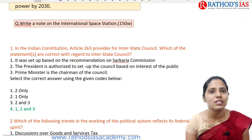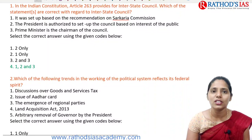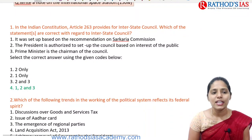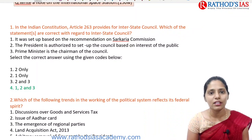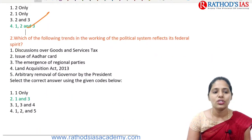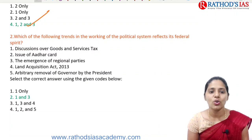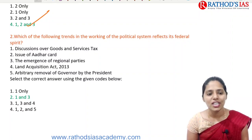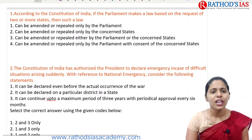For practice, write a note on the International Space Station in not more than 150 words. Yesterday's prelims questions: Article 263 on Interstate Council — the council was set up on the recommendations of the Sarkaria Commission, the President has the right to set it up in public interest, and the Prime Minister is the chairman. All three statements are correct, so the answer is option four. Regarding federal spirit: 'discussions over GST' and 'emergence of regional political parties' reflect a federal spirit; the correct answer is option two (statements one and three).